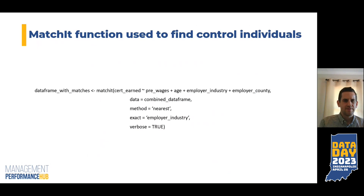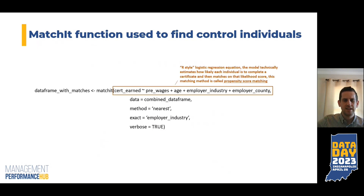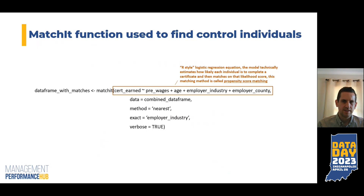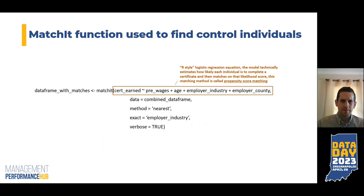Let's take a look at the syntax of the actual function. This is the code to run this function using MatchIt. You see the output data frame to the left of the arrow and the MatchIt function itself on the right. At the top is an R-style logistic regression equation — the output variable on the left is whether that individual earned a certificate or not, and the predictor variables are pre-wages, age, starting industry, and starting employer county. What the model's doing is calculating a likelihood score that an individual would have completed a certificate, then matching each certificate completer to a control individual who is equally or similarly likely to complete one. This matching method is called propensity score matching.